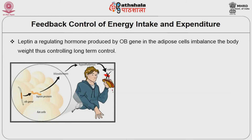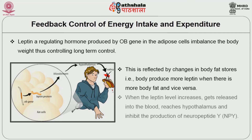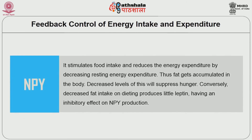Leptin, a regulating hormone produced by the OB gene in the adipose cells, imbalances the body weight thus controlling long-term control. This is reflected by changes in body fat stores — the body produces more leptin when there is more body fat and vice versa. When the leptin level increases, it gets released into the blood, reaches the hypothalamus and inhibits the production of neuropeptide Y, abbreviated as NPY. NPY stimulates food intake and reduces energy expenditure by decreasing resting energy expenditure. Thus, fat gets accumulated in the body.